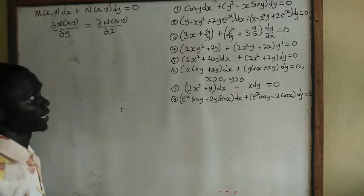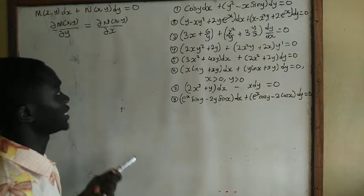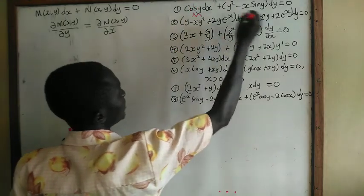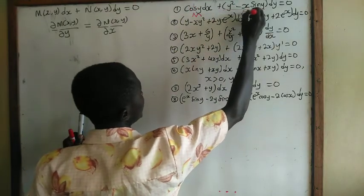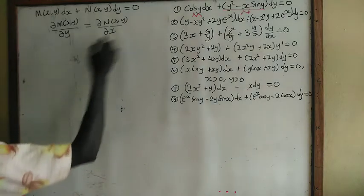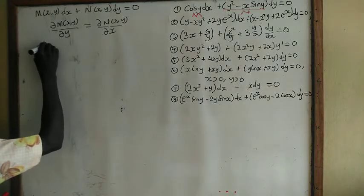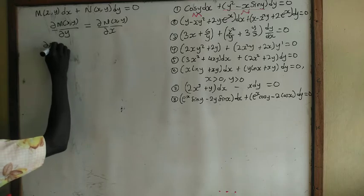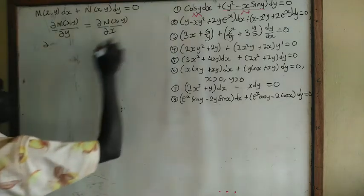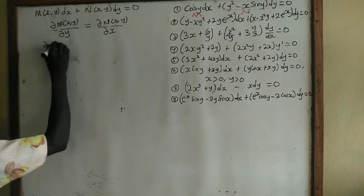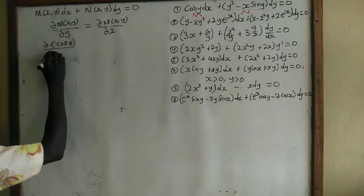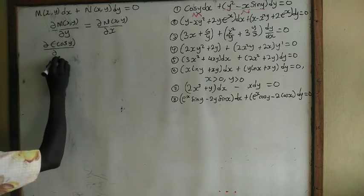So in each case, we are going to verify whether the partial derivative of M with respect to y will be equal to the partial derivative of N with respect to x. Now let's take the first one. For the first question, this will be our M, and the whole of this will be our N. So we are going to compute del M on del y, putting in the function cosine of y.